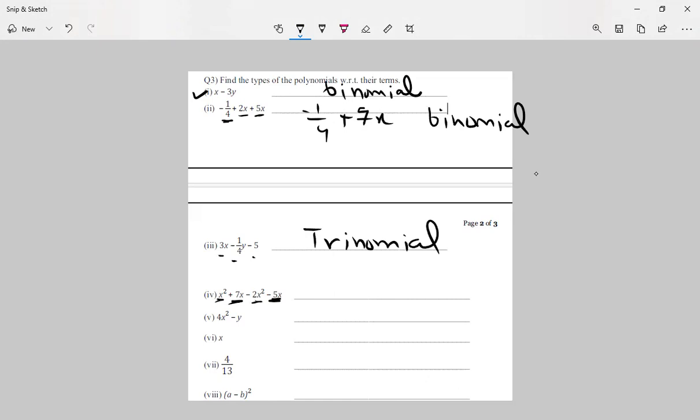Plus minus is minus. Minus 2x square plus x square will be minus x square and plus 2x. It means that it is again binomial.